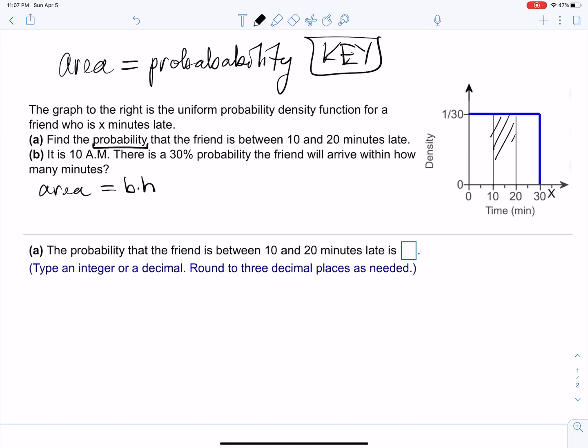If we're going to go between 10 and 20 minutes, what's that area? All we got to do is find that area and that will be the probability. Notice that the base here is 10—20 minus 10 equals 10—and the height is 1 over 30. So this is going to be 10 times 1 over 30, which is 1/3.